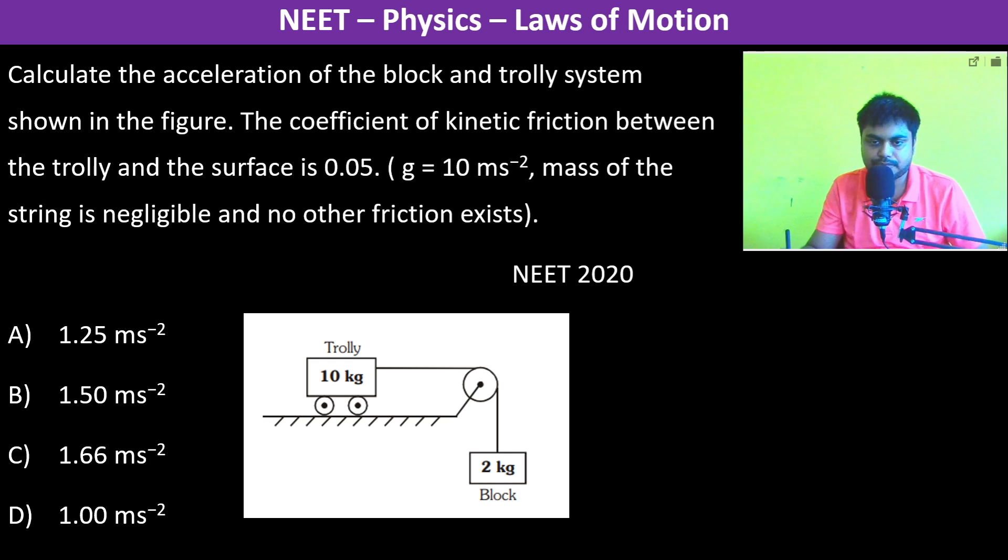So for the block, let us draw this free body diagram. This is 2g, which is 20 newtons, and above there is tension T. Therefore, 20 minus T is equal to 2 into A.